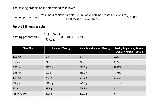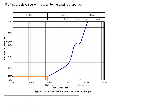Once we have the passing proportion for all sieve sizes, we can determine the grain size distribution by plotting passing proportion against sieve size. You'll often see passing proportion used synonymously with percent smaller or percent finer — they all mean the same thing. Once we plot this, this is the grain size curve that we obtain.